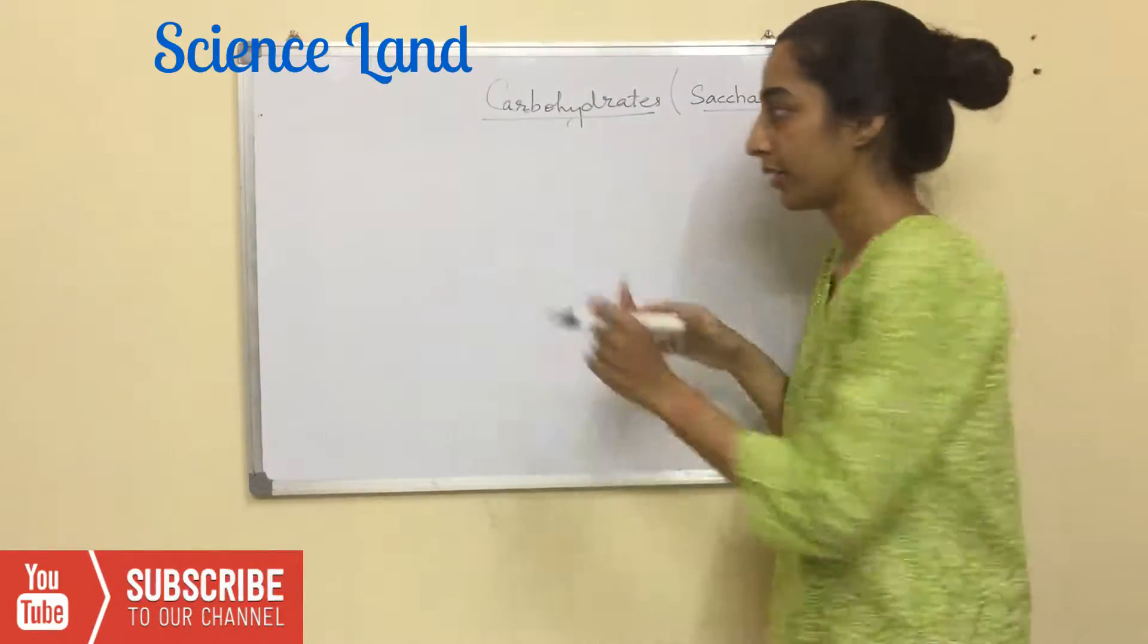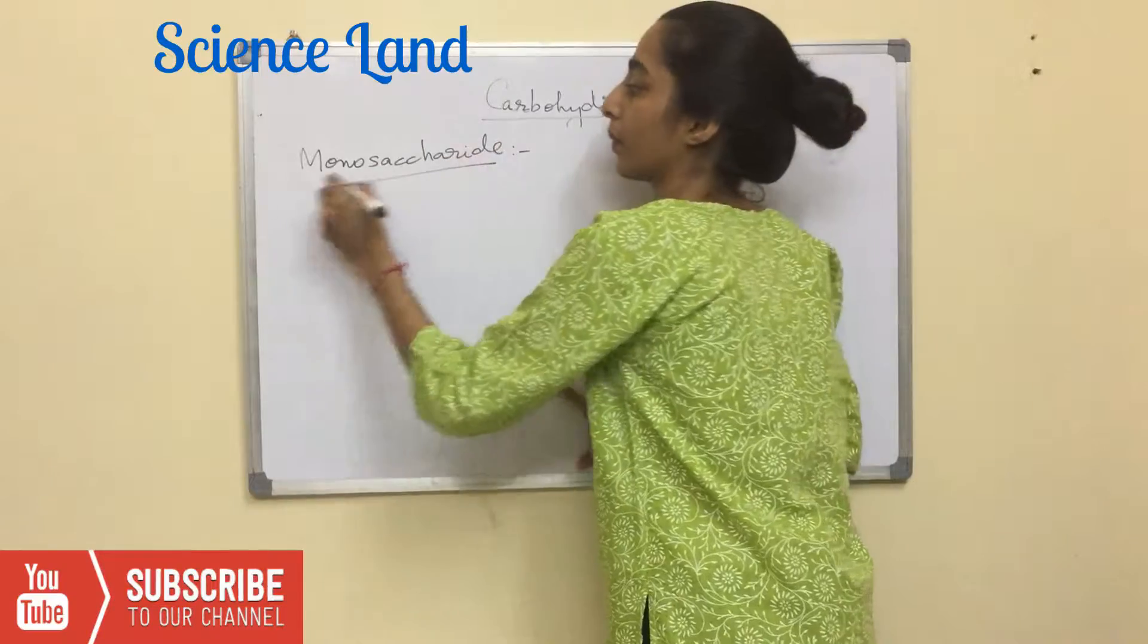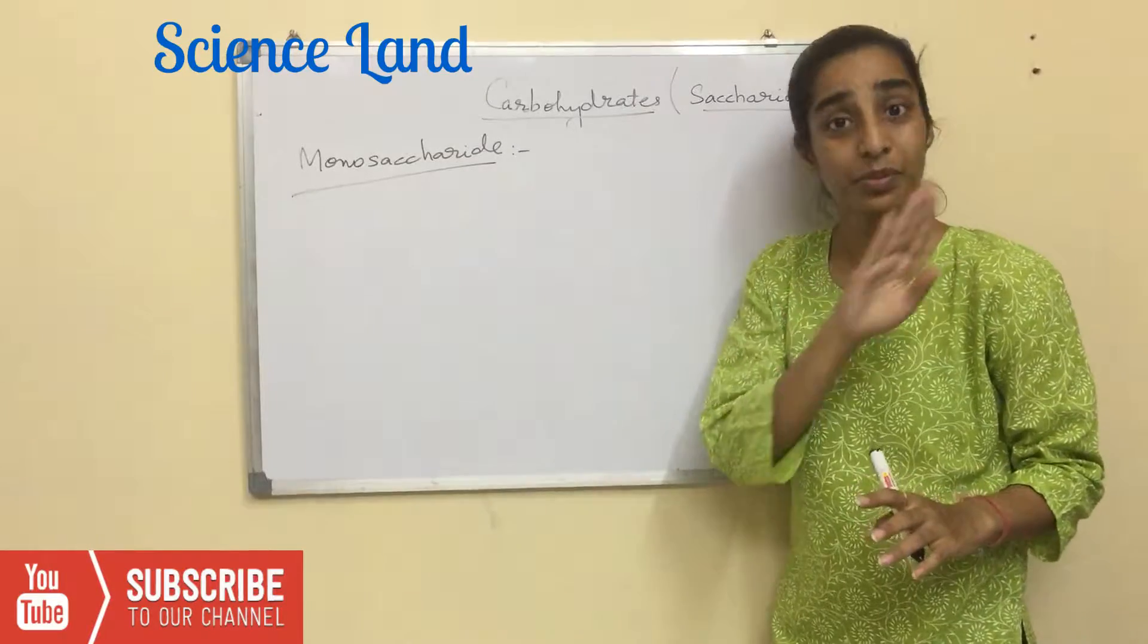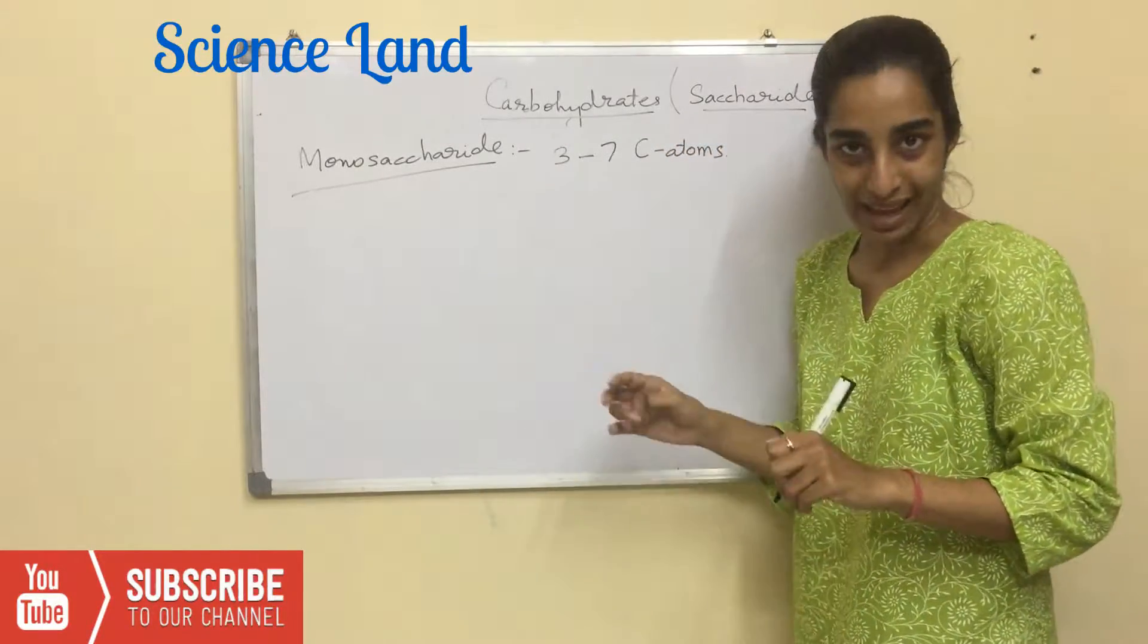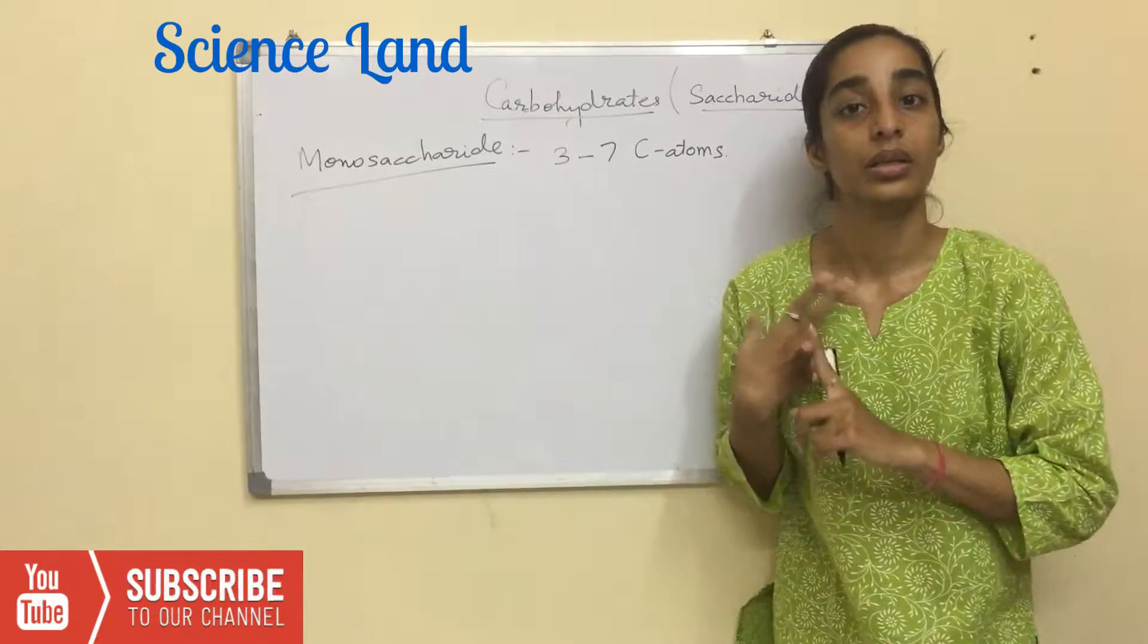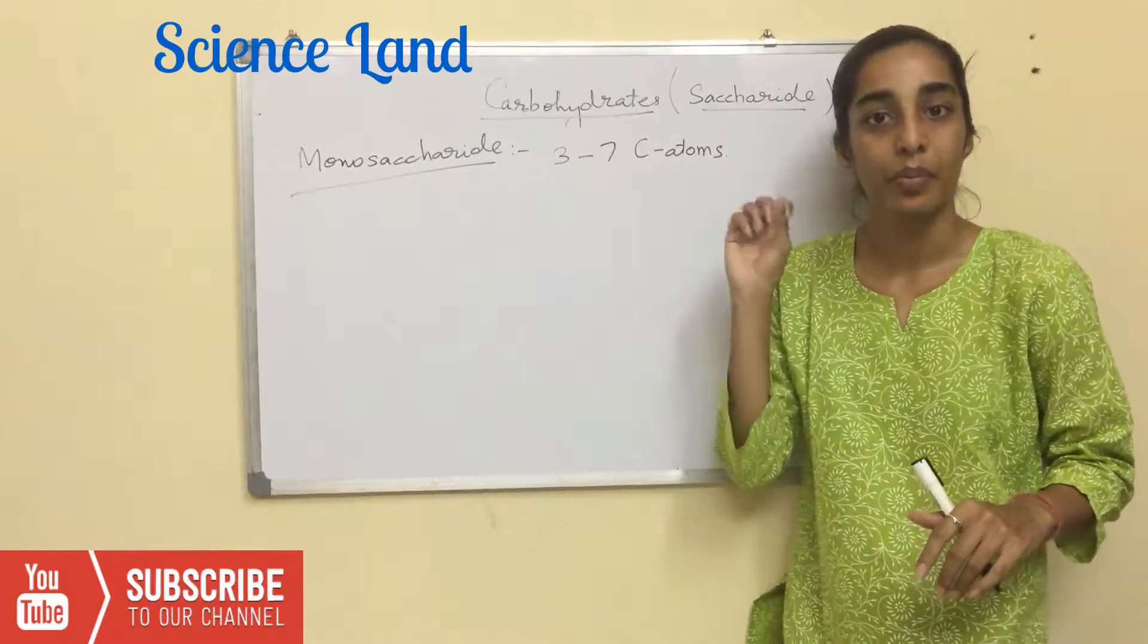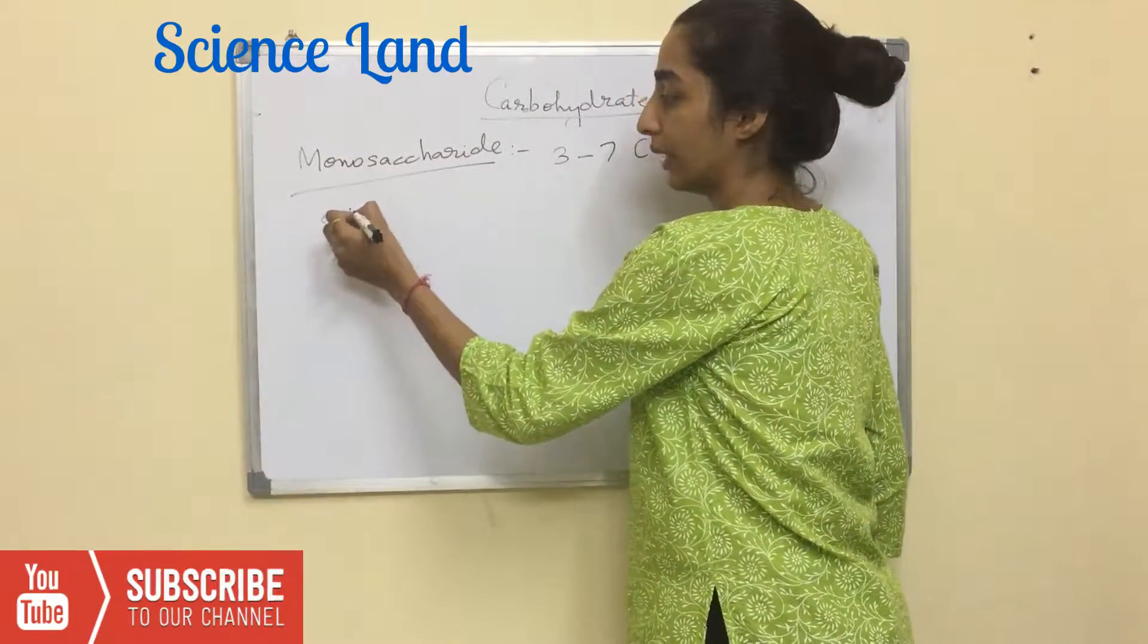So what is monosaccharide? The backbone of monosaccharides have at least three to seven carbon atoms. For example, glyceraldehyde has three carbon atoms. Glucose has six carbon atoms. An example would be D-glucose.